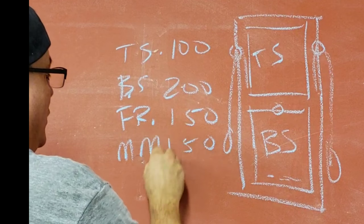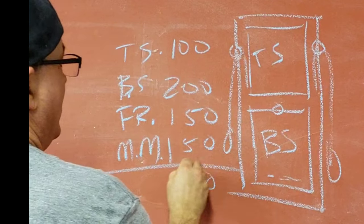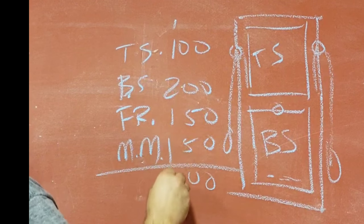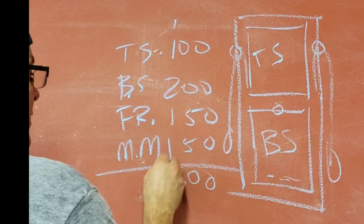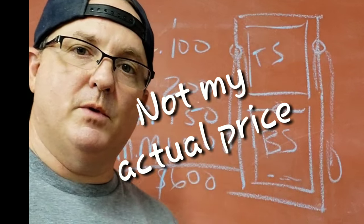I call that the mechanical makeover, M&M. So you add all that together, you get what is that? $600 for your window, because you priced out all your elements. It wasn't that easy.